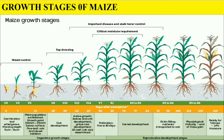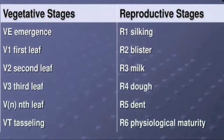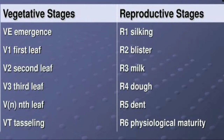Now let us discuss about the growth stages of maize in detail. Some of the stages are vegetative stages and reproductive stages. The vegetative stages include emergence (VE), V1 first leaf stage, V2 second leaf stage, V3 third leaf stage, VN nth leaf, and VT tasseling stage. The reproductive stages are represented by R: R1 silking stage, R2 blister stage, R3 milk stage, R4 dough stage, R5 dent stage, and R6 physiological maturity stage.